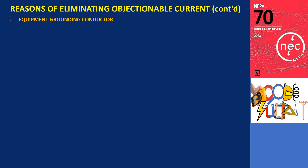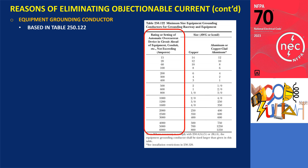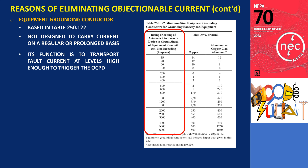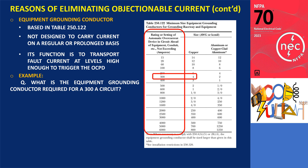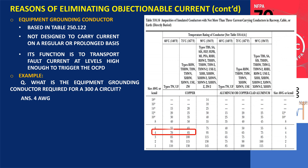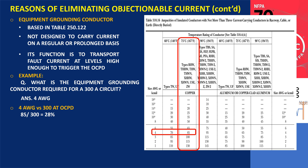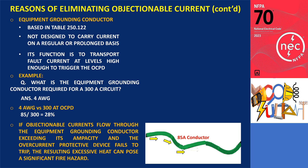Furthermore, the sizing of equipment grounding conductors is primarily determined by Table 250.122, taking into account the characteristics of the overcurrent protective device. Equipment grounding conductors are not intended to carry current under normal circumstances. Their purpose is to carry fault current of sufficient magnitude to activate the overcurrent protective device. For example, Table 250.122 specifies that a minimum 4AWG copper equipment grounding conductor should be installed for a circuit protected by a 300-ampere overcurrent device. However, a 4AWG copper conductor with 75°C rated insulation has an ampacity of only 85 amperes according to Table 310.16, representing just 28% of the overcurrent device rating. If objectionable currents flow through the equipment grounding conductor exceeding its ampacity and the overcurrent protective device fails to trip, the resulting excessive heat can pose a significant fire hazard.